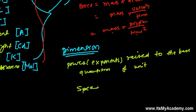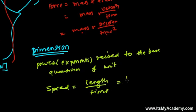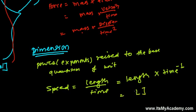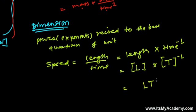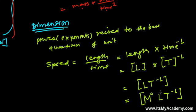For example, speed is length divided by time — how much distance I'm traveling in a certain interval of time. This can be written as length times time to the power minus one, or [L][T⁻¹]. If we include mass, it has power zero, so the full expression is [M⁰ L¹ T⁻¹].